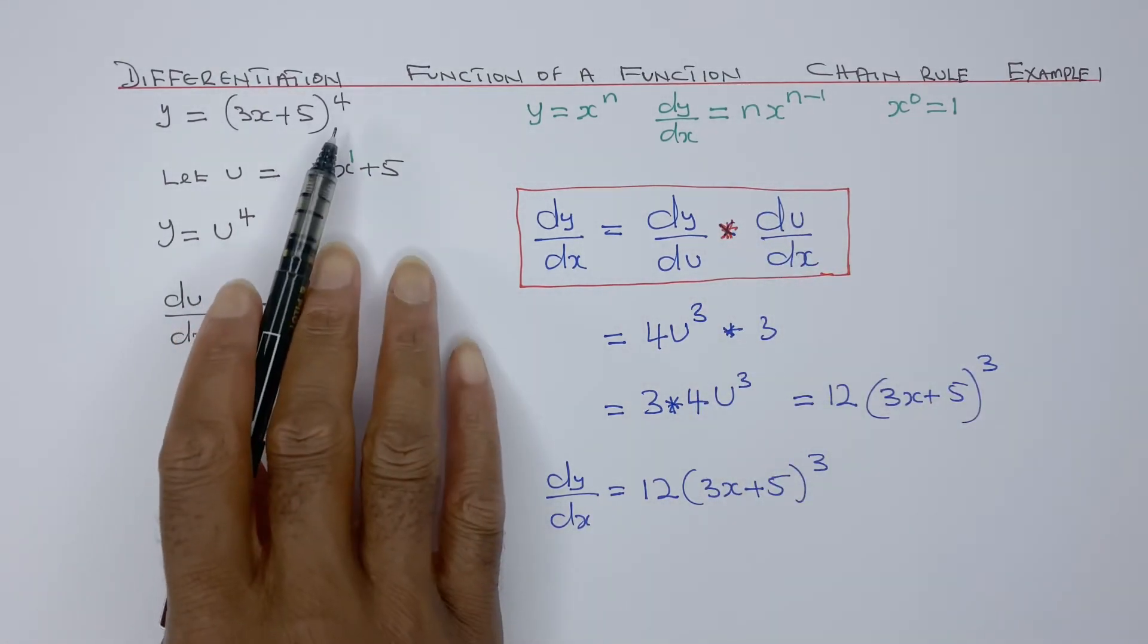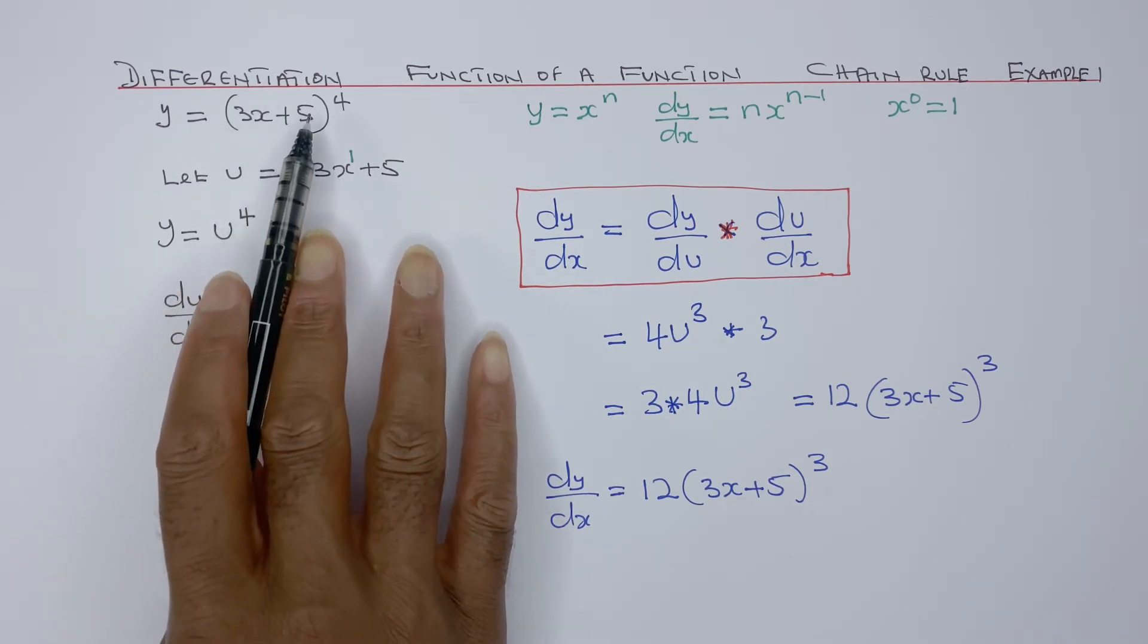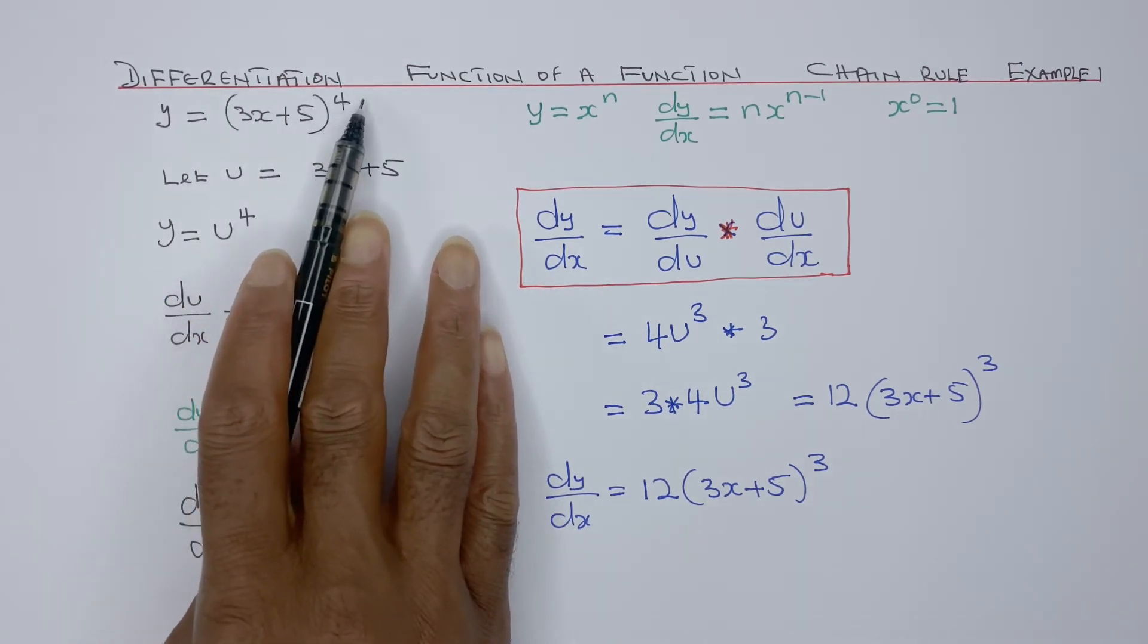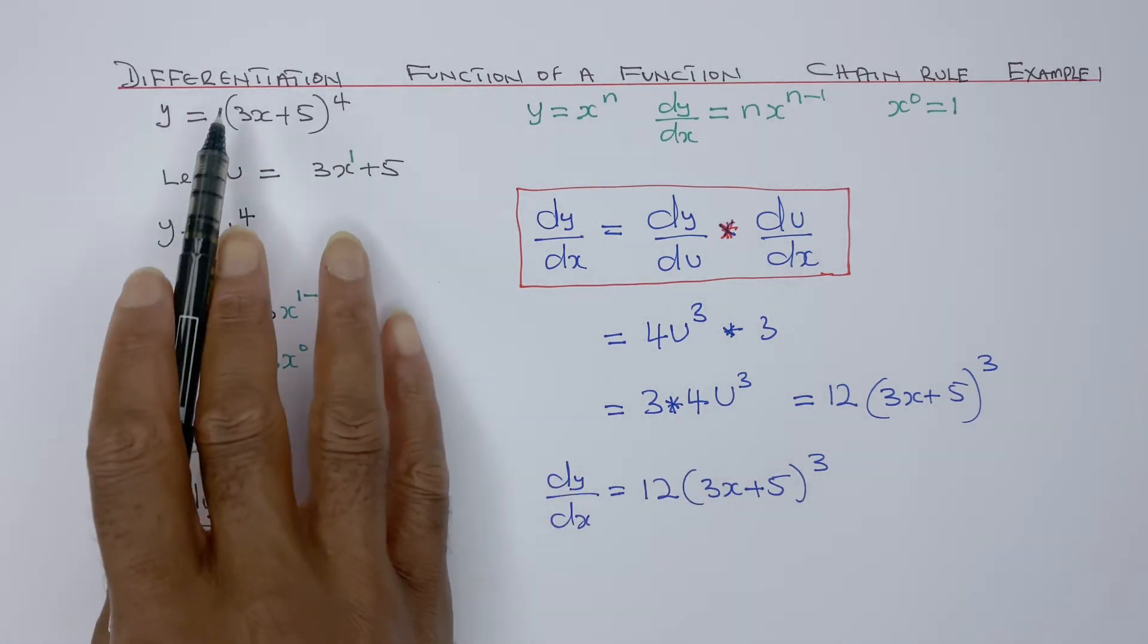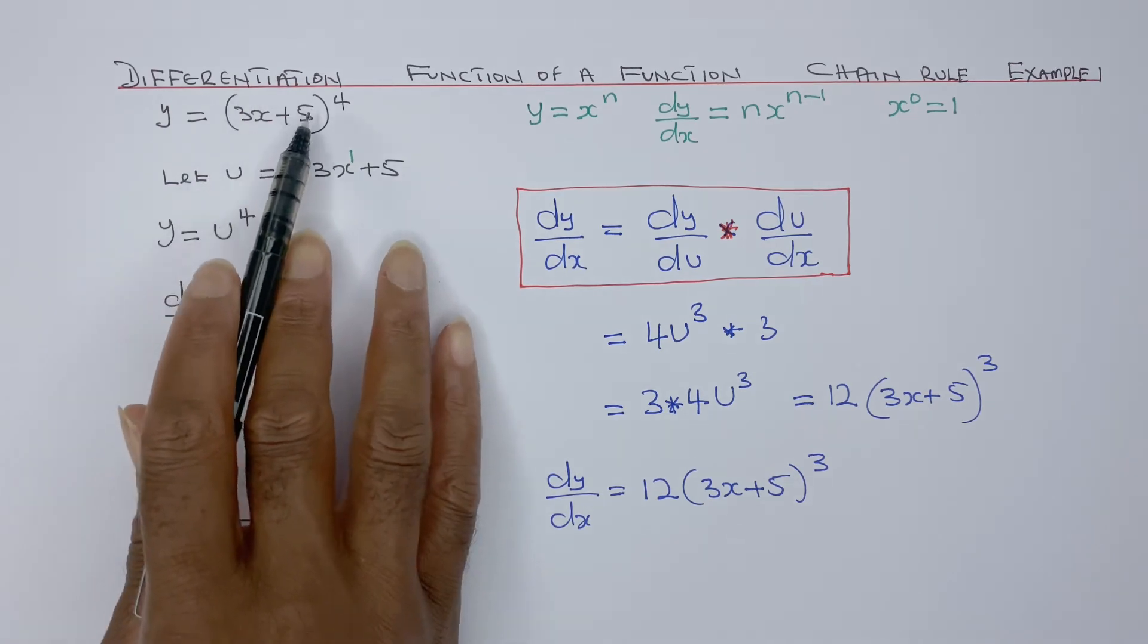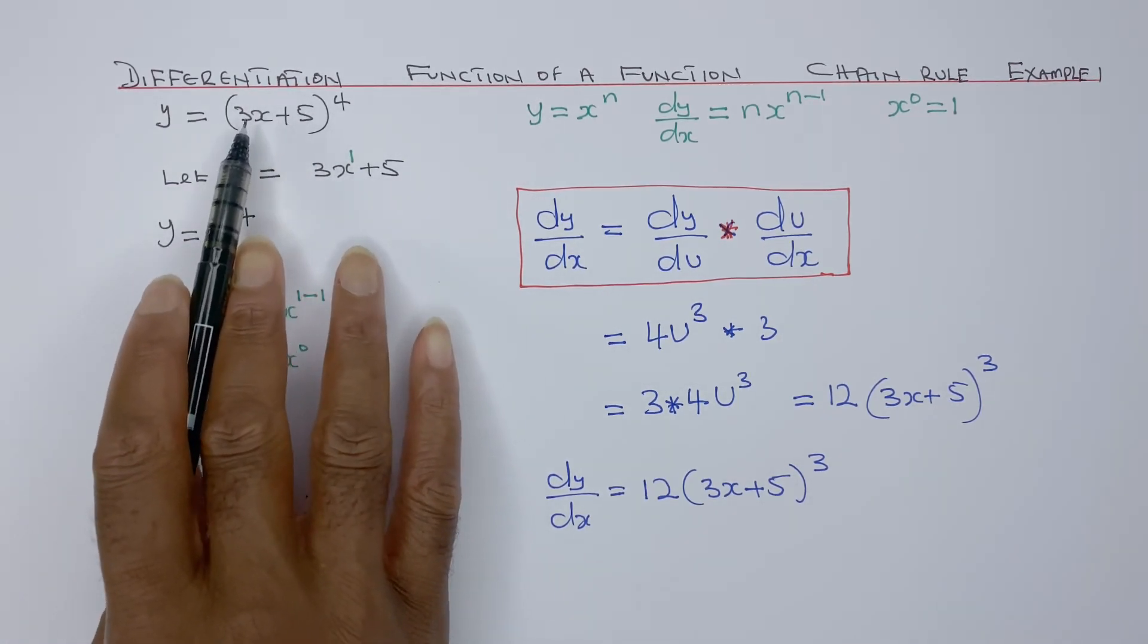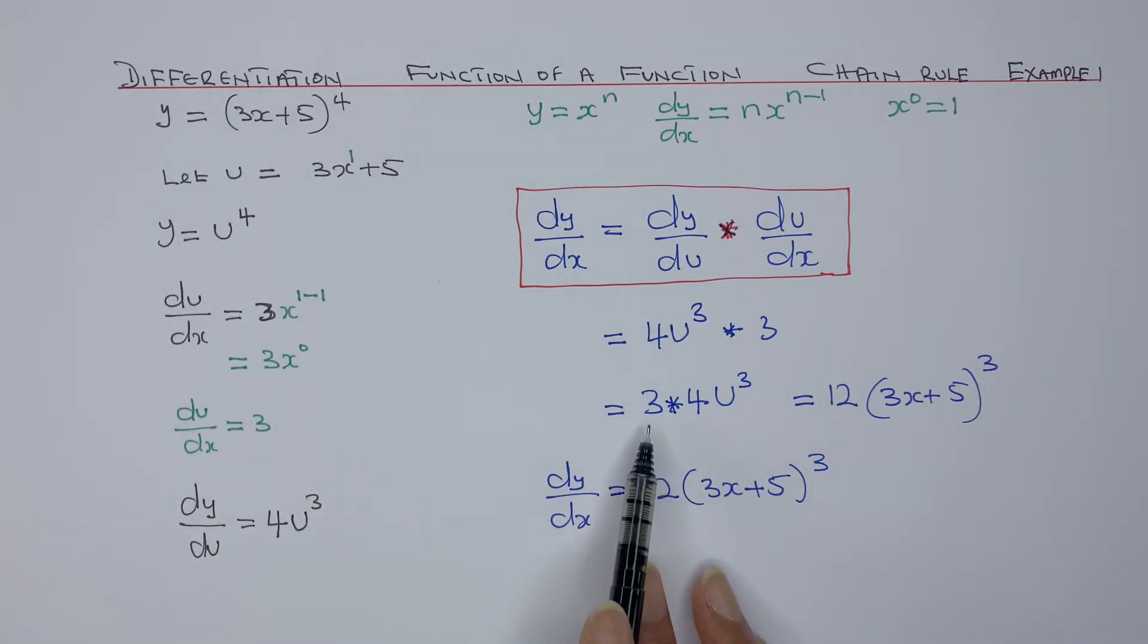We could have done it by saying if I differentiate that, think of that as a bigger x. So that would be 4. You bring the 4 here and get 4 minus 1, that's 3. Then you times it by the differential of what's inside. If I differentiate the inside bracket, that's 3. So that would be times 3.